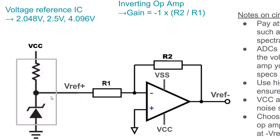Next, we use an op amp configured in an inverting fashion. The positive voltage reference value (Vref+) goes into the negative, inverting input of the op amp, and the non-inverting input is tied to ground. This is a common op amp configuration. Two resistors set the gain. Since it's inverting, the gain is −R2/R1. In my example circuit, R1 and R2 are equal, so we have a gain of negative one — we're simply inverting our positive voltage reference into a negative voltage reference on the output.